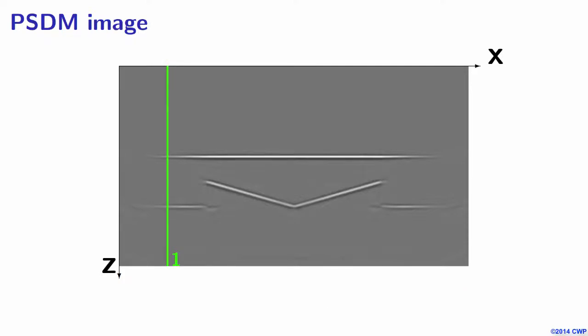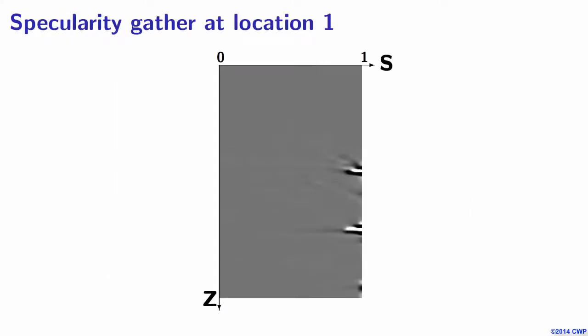Let's consider the image points represented by this green strip and look at the specularity gathers at this image. These image points are basically lying on a flat reflector, so mostly there should be specular energy from these points, and it should be focused around the specular value of 1. This is what we get. Both shallow and deeper image points can produce only specular reflections, so the energy is located around 1.